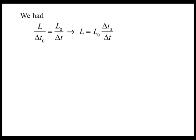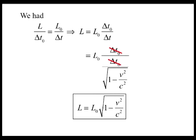Using the time dilation equation to substitute for Delta T, we obtain the following. Canceling Delta T0 in the numerator and denominator, we have L equals L0 times the square root of 1 minus v squared divided by c squared, which is the length contraction equation.